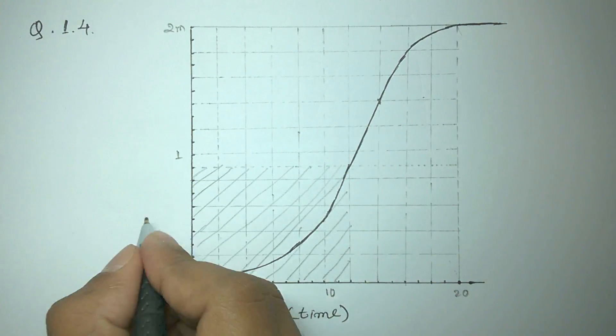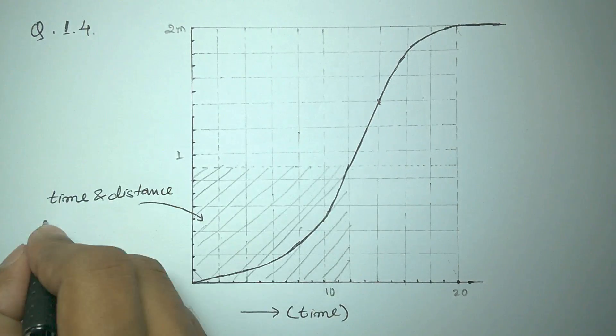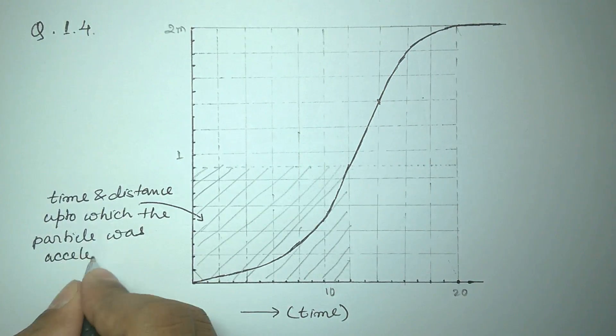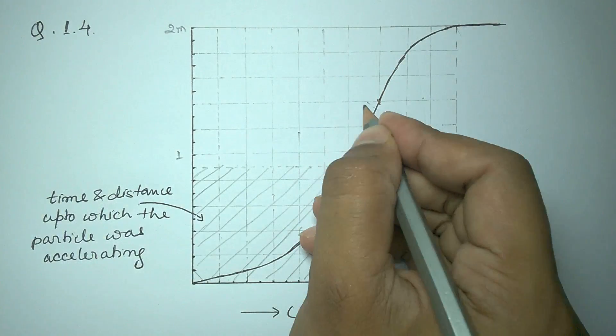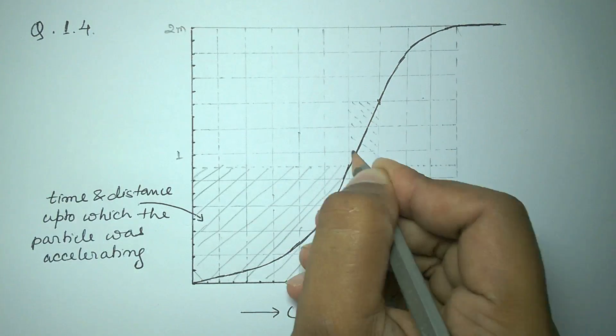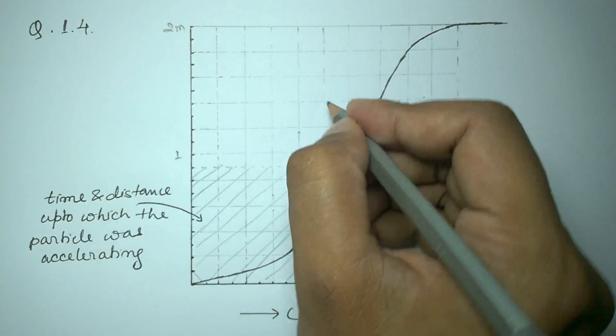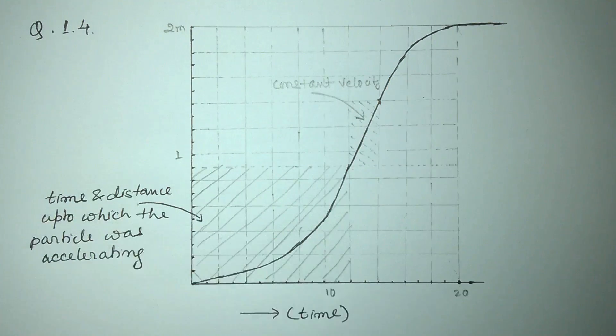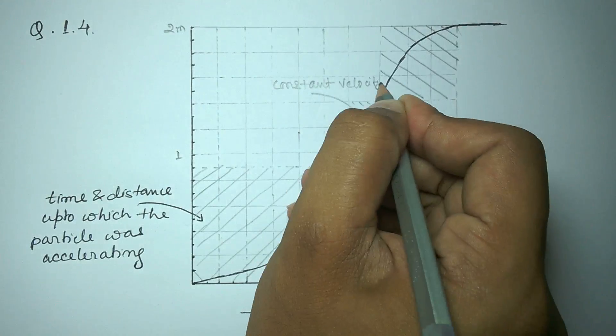First shaded region is representing the time and distance during which the particle was accelerating. The second part is shaded with dotted lines and represents no acceleration zone, which means the particle is moving with constant velocity. Third part is again shaded with solid lines and represents the area under which the particle was decelerating.